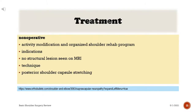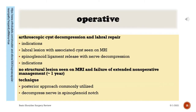Treatment of spinoglenoid notch entrapment: non-operative management includes activity modification and an organized shoulder rehab program with posterior shoulder capsule stretching, indicated when no structural lesion is seen on MRI. Operative treatment includes arthroscopic cyst decompression and labral repair for a labral lesion with associated cyst on MRI, or spinoglenoid ligament release with nerve decompression when there is no structural lesion but extended non-operative management of approximately one year has failed.